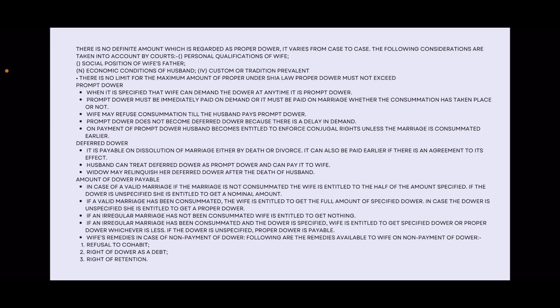In an irregular marriage that has not been consummated, the wife will not get anything. If the marriage is irregular but consummated, and Dahr is specified, the wife gets the specified amount or Proper Dahr, whichever is less. If Dahr is unspecified in an irregular marriage, then Proper Dahr is paid.